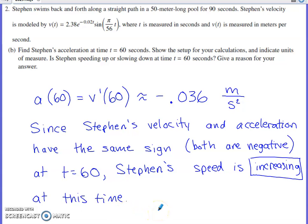Part B asks us to find Stephen's acceleration at time 60 seconds. Show the setup for your calculation, indicate units of measure. And then is Stephen speeding up or slowing down at time 60 seconds? Give a reason for your answer. So I'm a little surprised by this. Show the setup for your calculation. I'm guessing they're just wanting to see that you recognize that the derivative of velocity is acceleration.